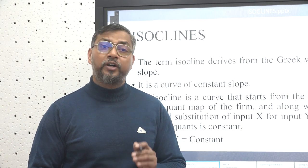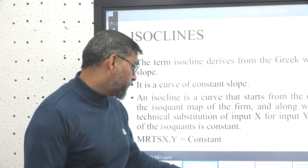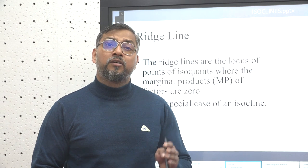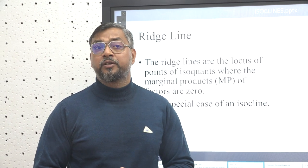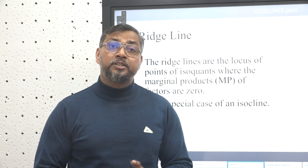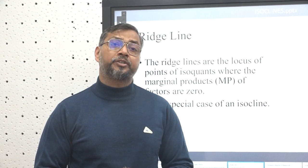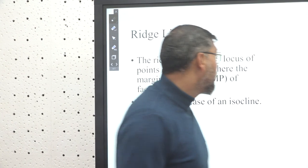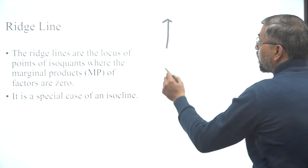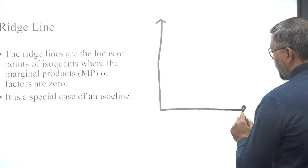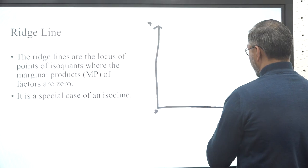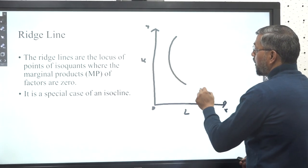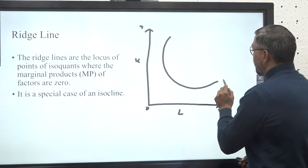On the basis of this, we can understand two special cases of isoclines. The first special case is the ridge line. A ridge line is a line which is the locus of points where the marginal product of factors of production is zero. Let's try to understand this with a graph — this is an isoquant point.